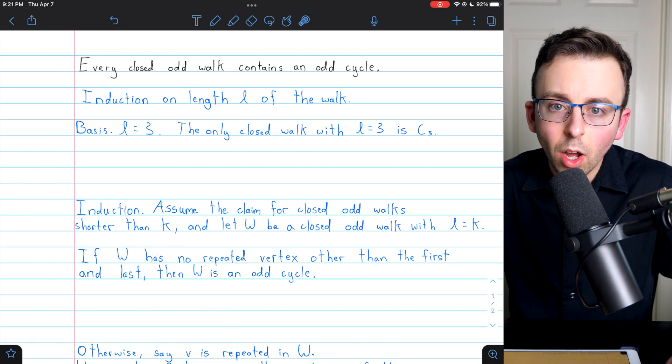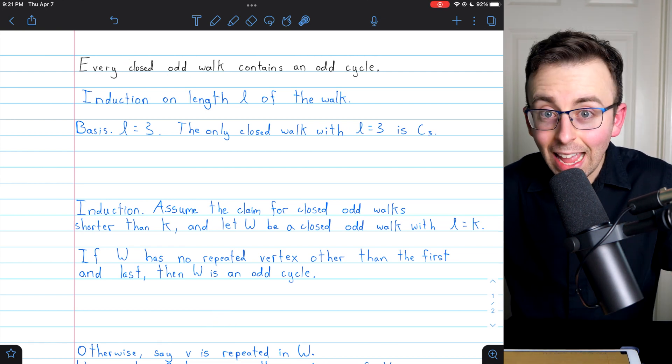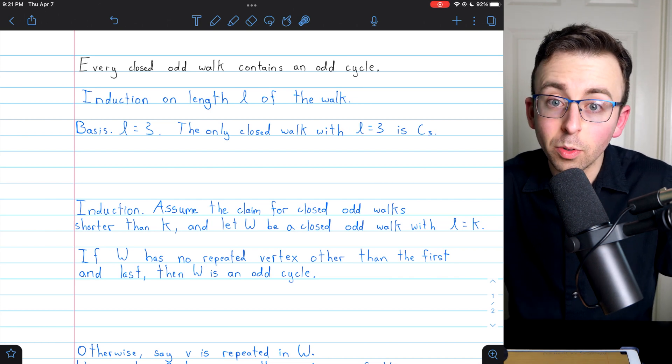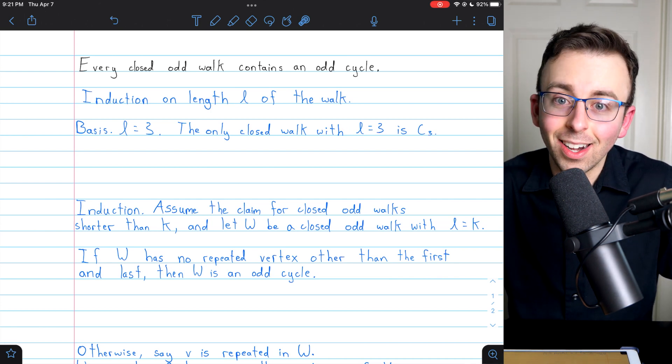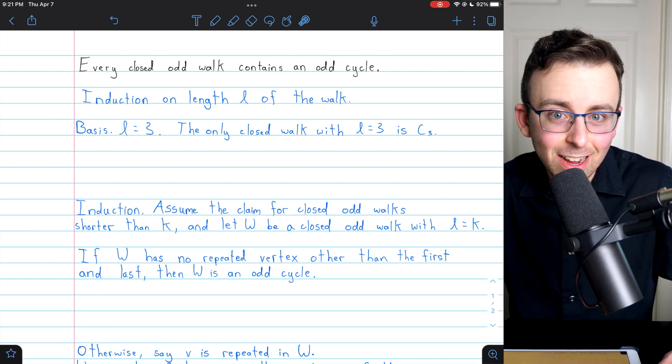A closed odd walk is a walk that ends where it started and traverses an odd number of edges, so it has an odd length. If we've got a walk like that, it has to have an odd cycle.